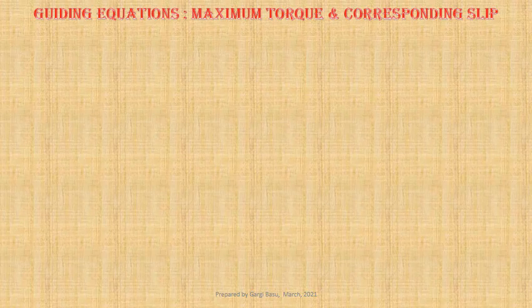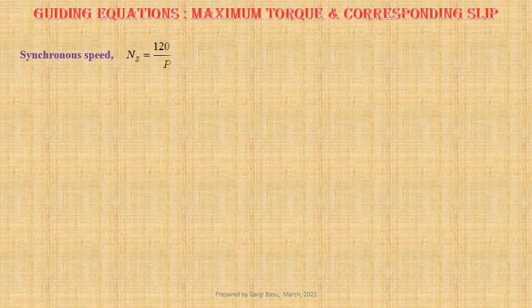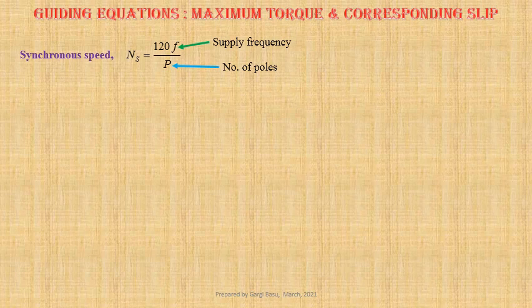Let us go through some important expressions in context to three phase induction motors, some of which we shall use today to solve the numerical problems. When three phase AC excitation is applied to the stator of a three phase induction motor, a magnetic field is produced which rotates at synchronous speed. Ns equals to 120F by P, where F is the supply frequency and P is the number of poles of the machine.